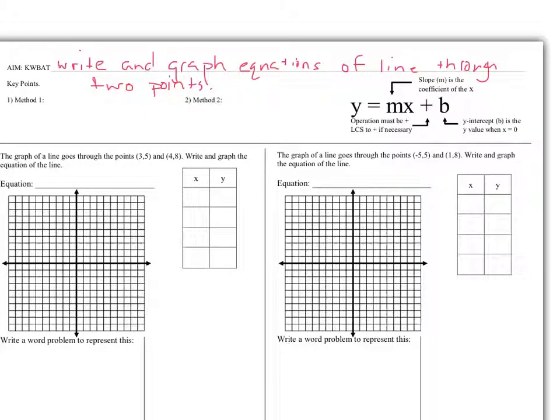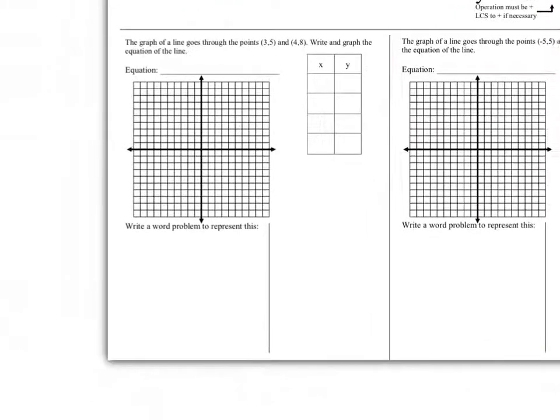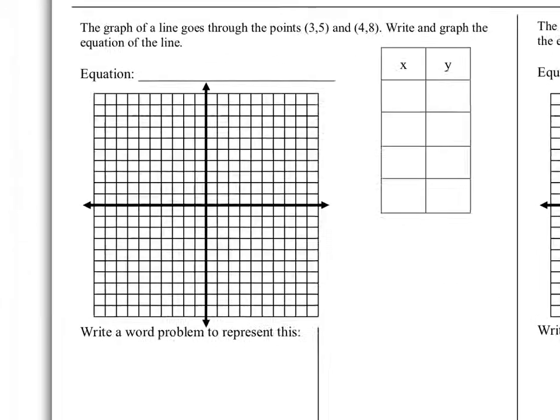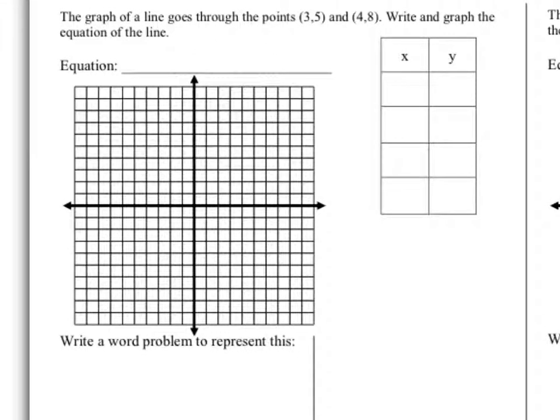Today we're going to be able to write and graph equations of lines through two points. The method that we do this, we can take the two points, we can throw them into a t-chart. That just kind of helps us get everything lined up so we can find the slope.